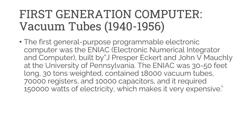The first general-purpose programmable electronic computer was the ENIAC (Electronic Numerical Integrator and Computer), built by J. Presper Eckert and John V. Mauchly at the University of Pennsylvania. The ENIAC was 30 to 50 feet long, weighed 30 tons, contained 18,000 vacuum tubes, 70,000 resistors, and 10,000 capacitors, and required 150,000 watts of electricity — making it very expensive.